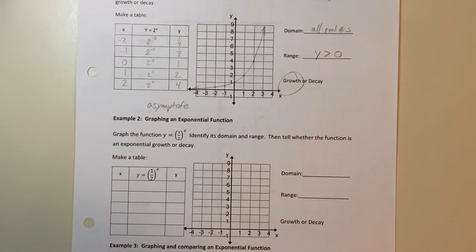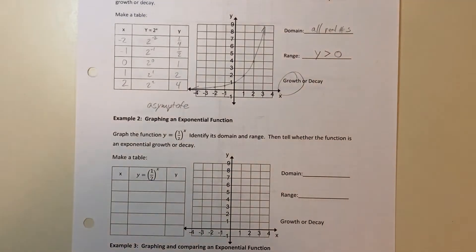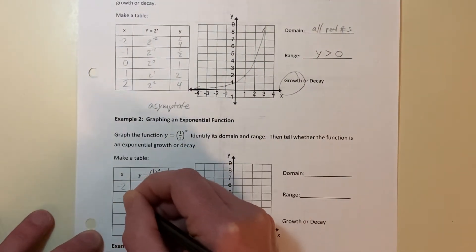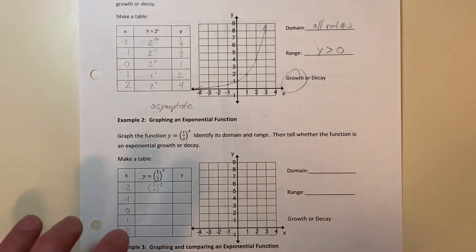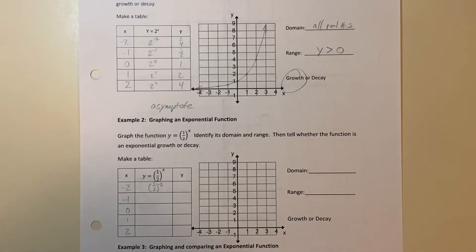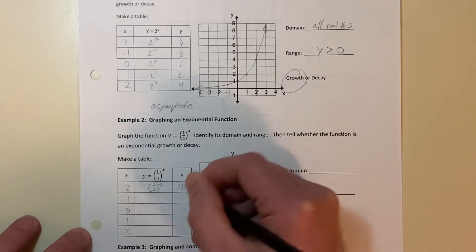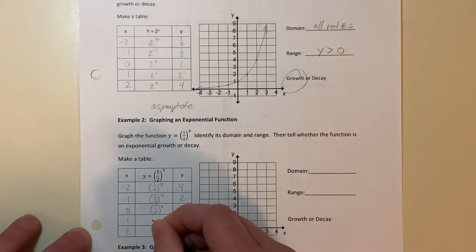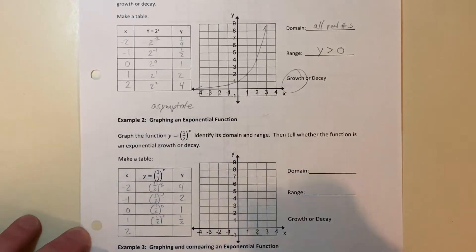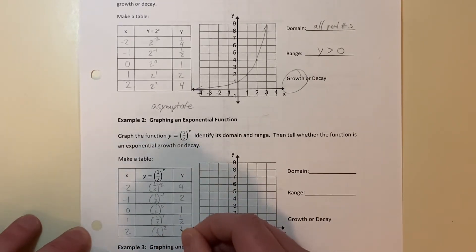For our next one, we've got an exponential function with one-half for our b value. One-half is between zero and one, so this is going to be a decay function. Same table: negative two, negative one, zero, one, and two. A negative exponent makes it the reciprocal — the reciprocal of one-half is two, and squaring gives four. Reciprocal for negative one is two. One-half to the zero power is one. One-half to the first is one-half. One-half squared is one-fourth.